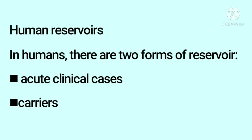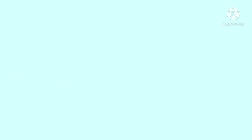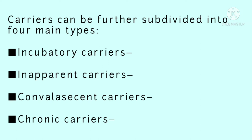The next type is carriers. Incubatory carriers spread infection during the incubation period. Inapparent carriers spread infection even when disease symptoms are absent. Convalescent carriers spread infection during the recovery stage. Chronic carriers spread infection over a long period without being aware of it.